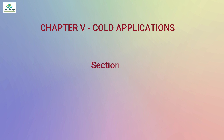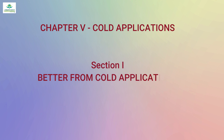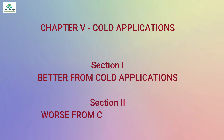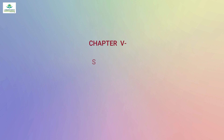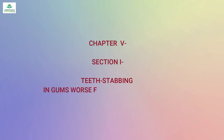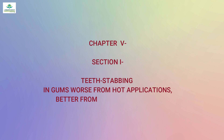Chapter 5 is 'Cold Application,' with Section 1 being 'Better from cold application' and Section 2 being 'Worse from cold application.' A rubric example from Section 1 under teeth: 'Stabbing in gums, worse from hot application and better from cold' — Gloninum.